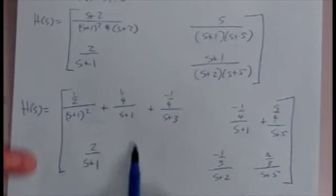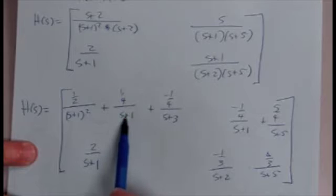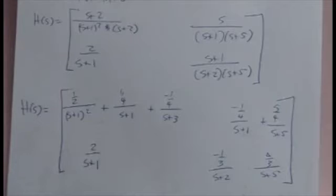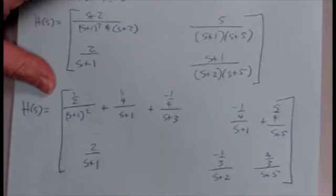So we'll notice how many terms we have. We'll have S plus 1 squared term, S plus 1 term, S plus 2 terms, S plus 3, and S plus 5. So we have quite a few eigenvalues for this system.